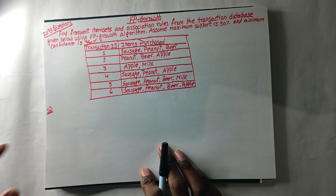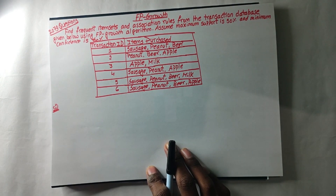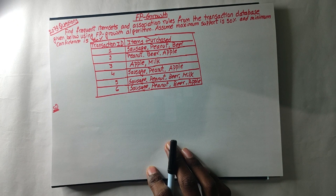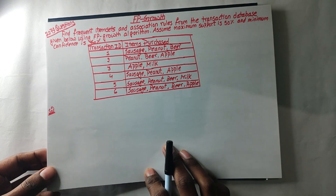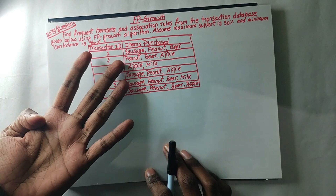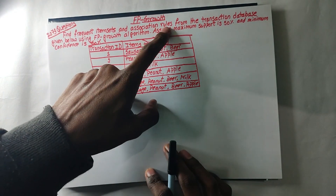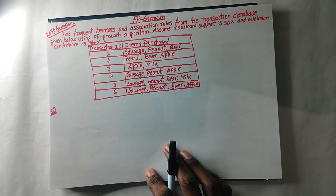This is the 4-part video. The first one is the first part in order, the second one is the tree diagram, the third one is the frequent item set, and the fourth one is the association system rule. This is the 4-part video.